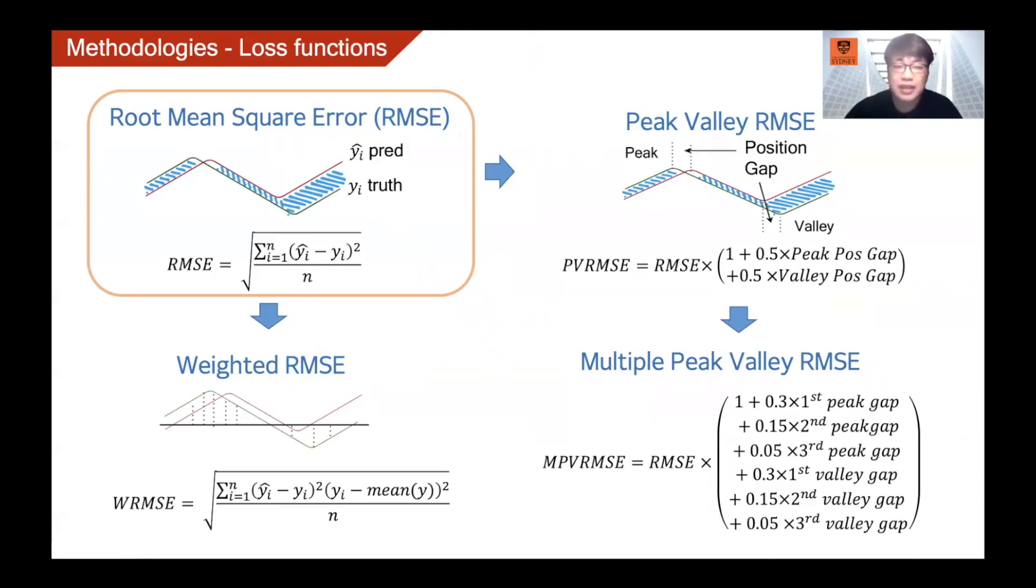Based on the RMSE loss function, we make several changes aimed at letting the model focus on critical points, such as peaks and valleys. The first variant is to add a weighted factor to each point in the prediction sequence by multiplying the square of the subtraction of the truth and the mean of the truth. This makes the point far from the mean value will get higher weight. Another change is made based on the position of the peaks and valley points. We add an extra penalty of the position gap between the predicted peak point and the true peak point, so it's done to the valley point.